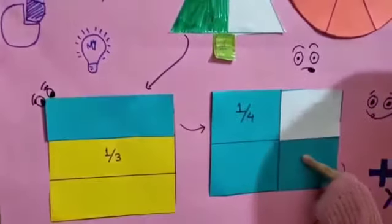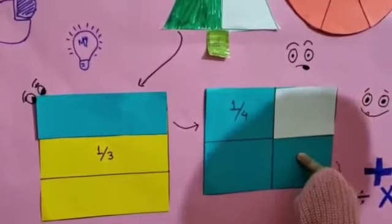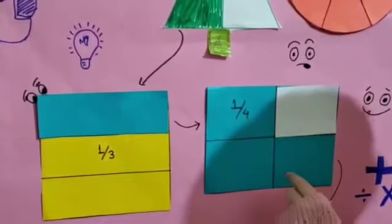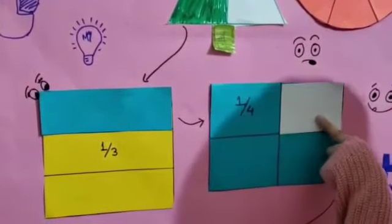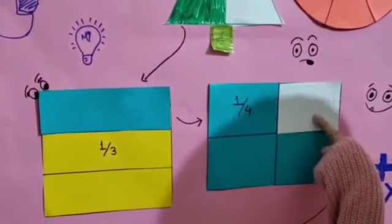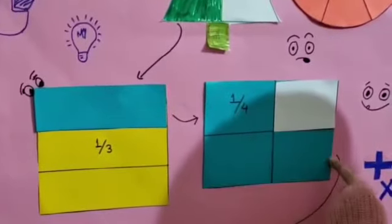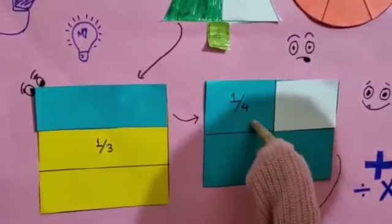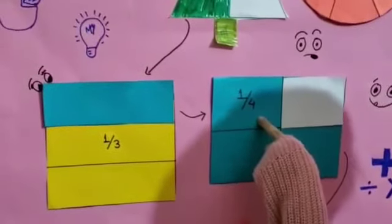The fourth shape is a rectangle. I have shaded one part in white, and the rest are in blue. So it is one by four of the rectangle.